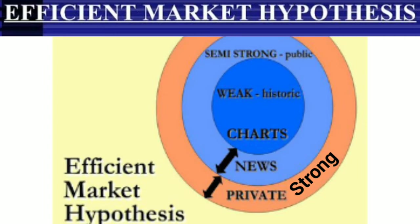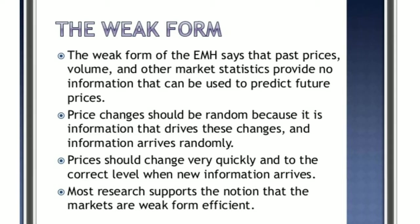EMH can be graphically presented. The top portion of the diagram is the strong form, the middle portion is the semi-strong form, and the inner portion is the weak form. The circles in the diagram represent the amount of information that each form of the Efficient Market Hypothesis includes.